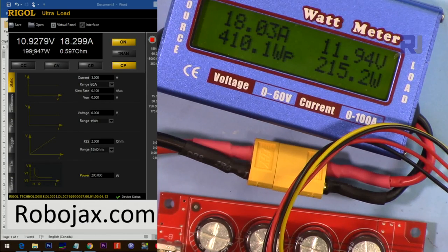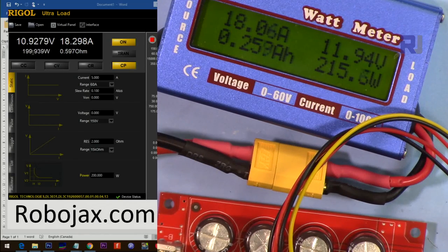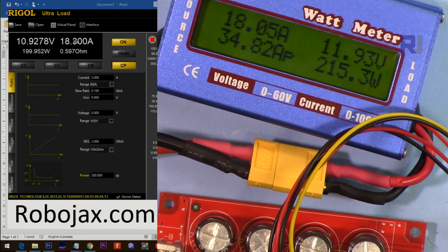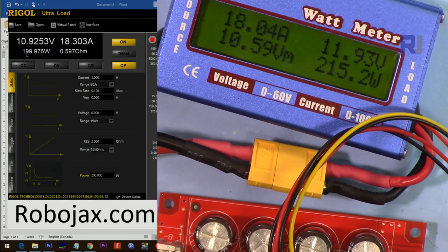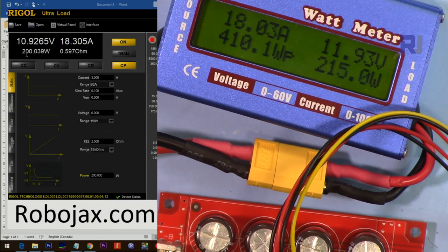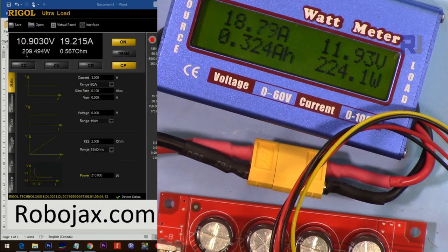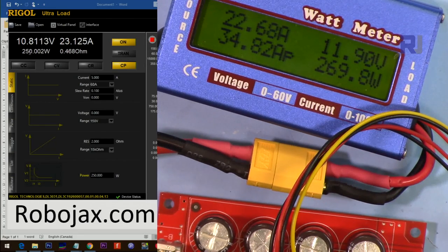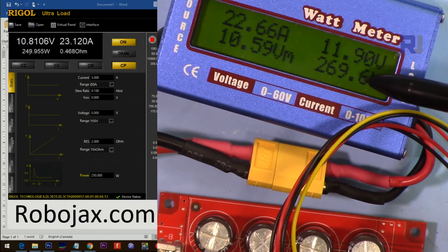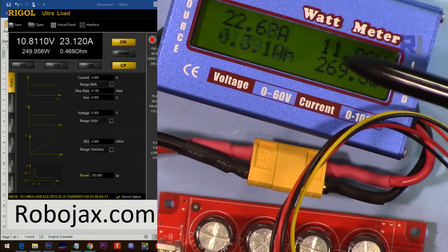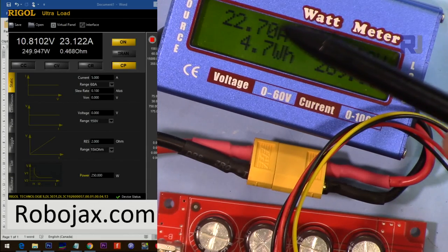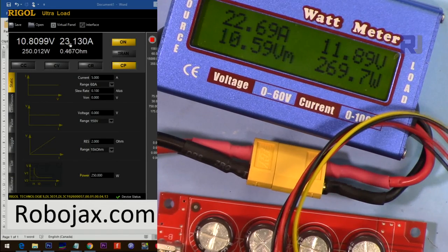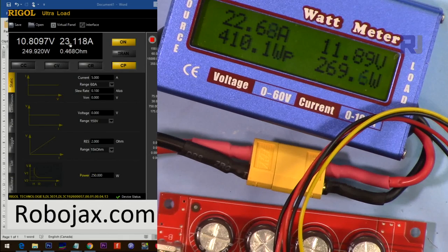So now we are at 200 watt and I'm touching this, it's very cool, absolutely like nothing is going on because the current is still low. Let's go more. Now we are about 250 watt, you can see 269 watt input and output. The input is 22.7 ampere and here we see 23 ampere. This device is so cool as if nothing is happening yet.